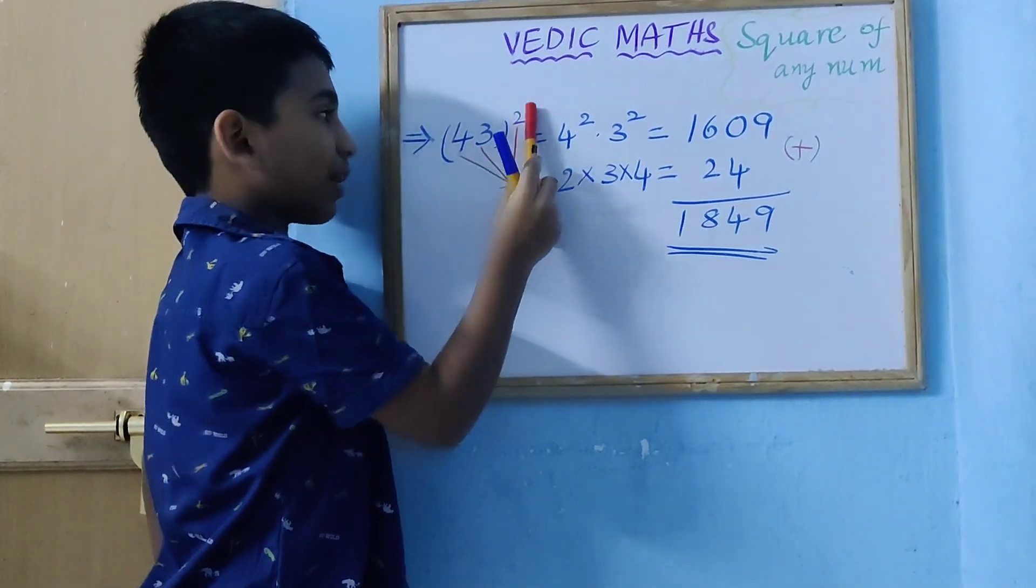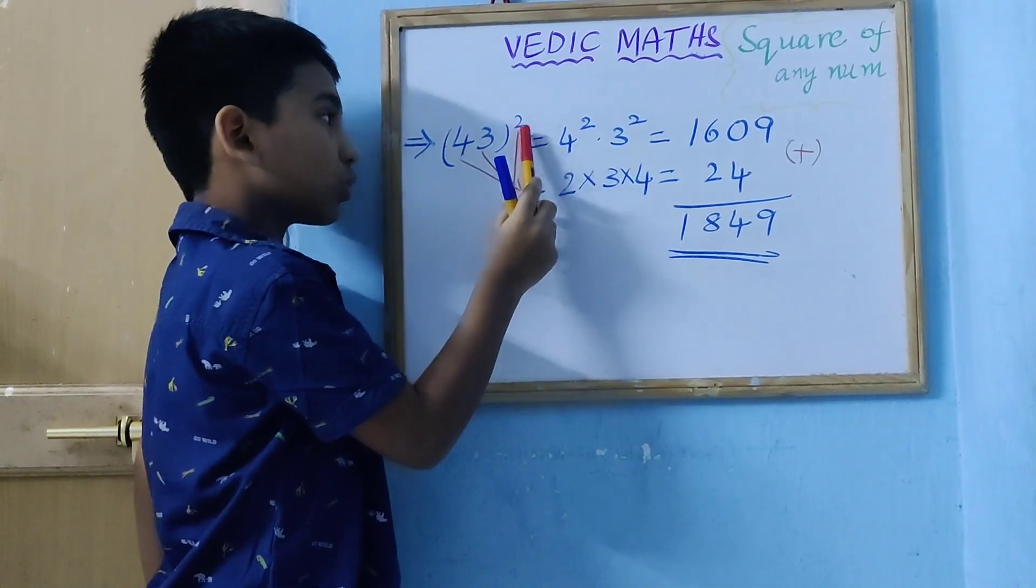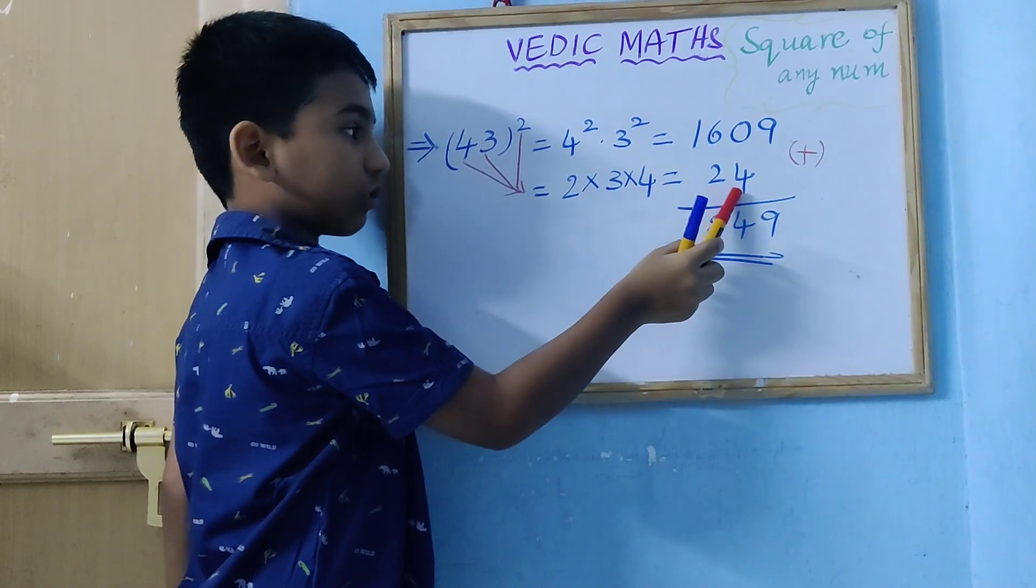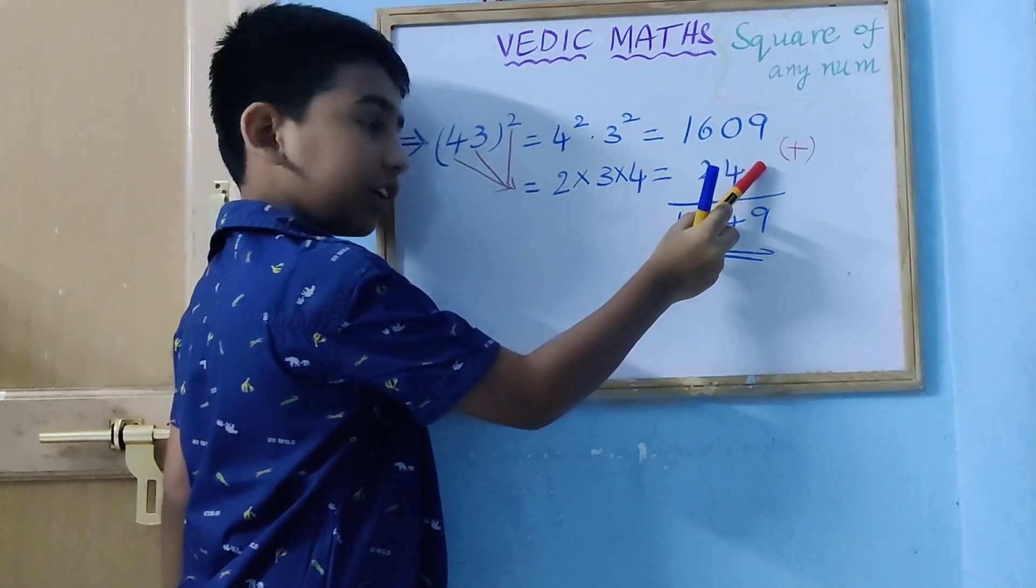Then, we multiply all these numbers. 2 into 3 into 4. 2 times 3 are 6, 6 times 4 are 24. We have to leave units place.